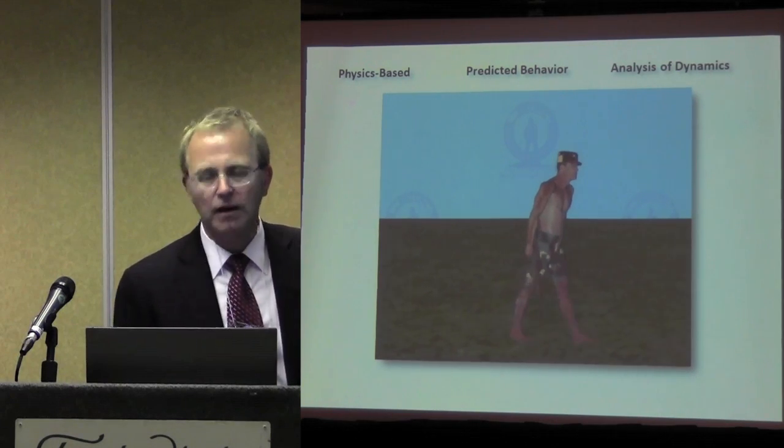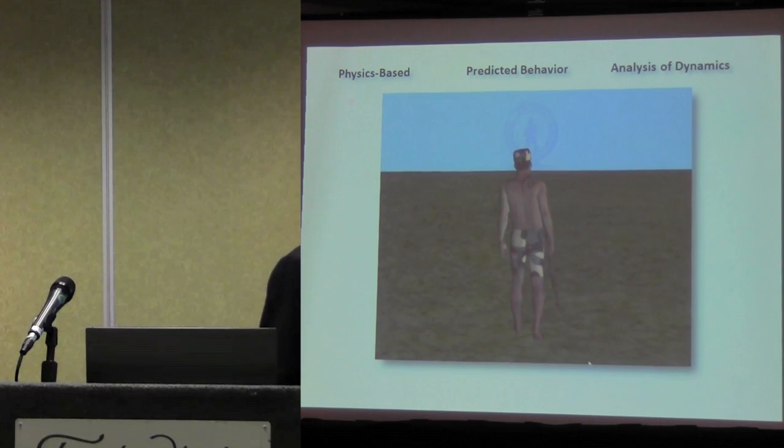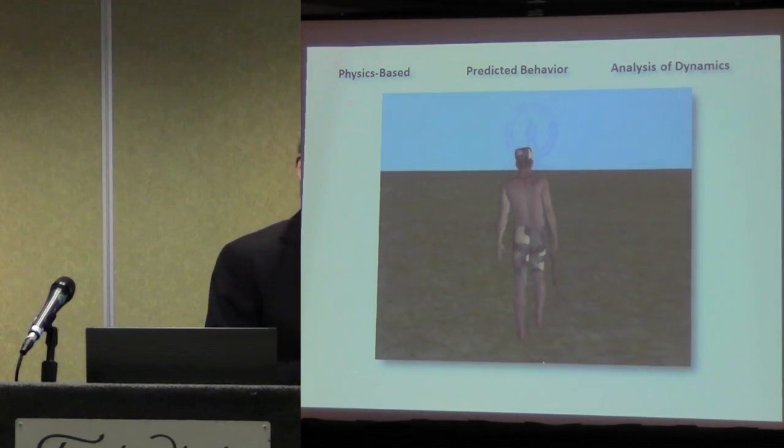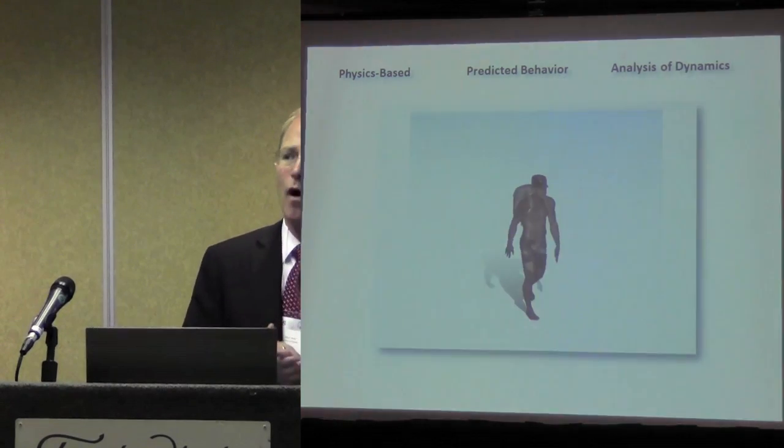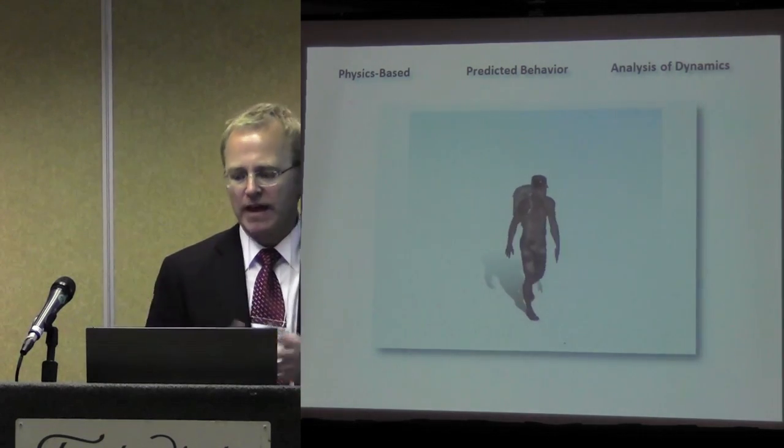So once again, a mathematical model where you can change parameters and see the effects. In this particular case, we're talking about a backpack. It's the same mathematical model for walking. What we've done is we put a backpack on his back, and we're looking at the result of that 20-pound pack.